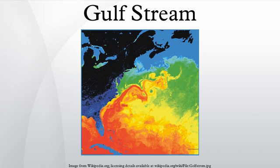The Gulf Stream influences the climate of the east coast of North America from Florida to Newfoundland, and the west coast of Europe. Although there has been recent debate, there is consensus that the climate of western Europe and northern Europe is warmer than it would otherwise be due to the North Atlantic Drift, one of the branches from the tail of the Gulf Stream. It is part of the North Atlantic Gyre.